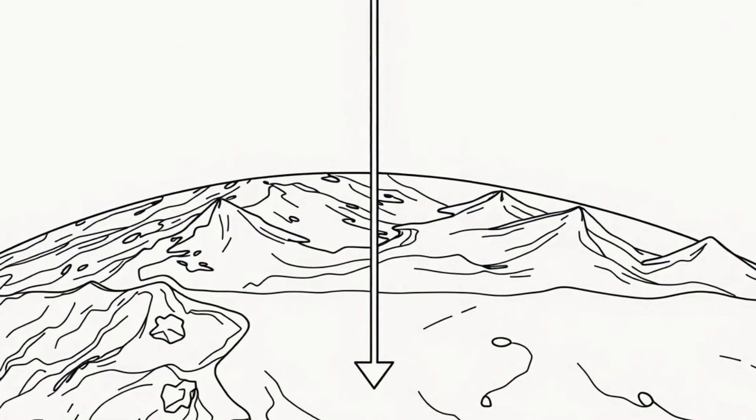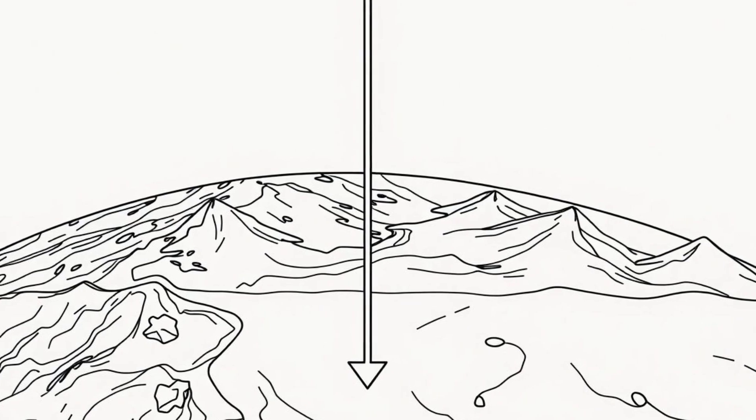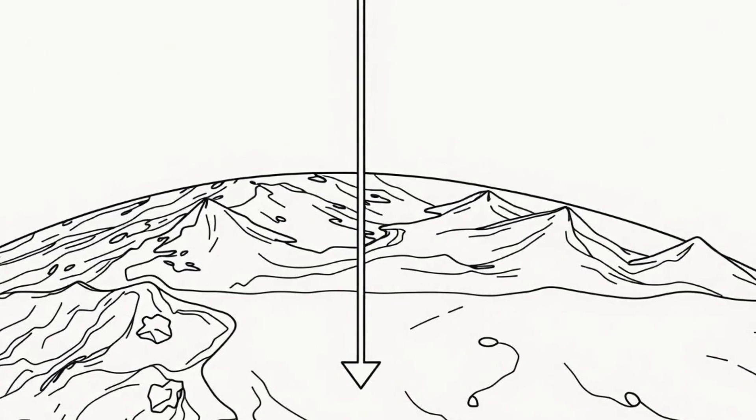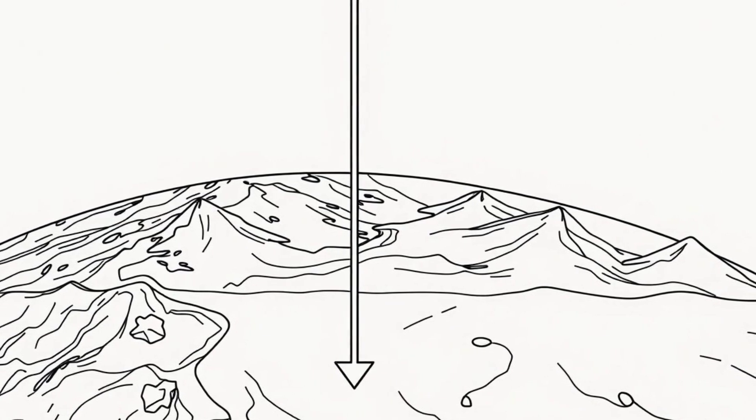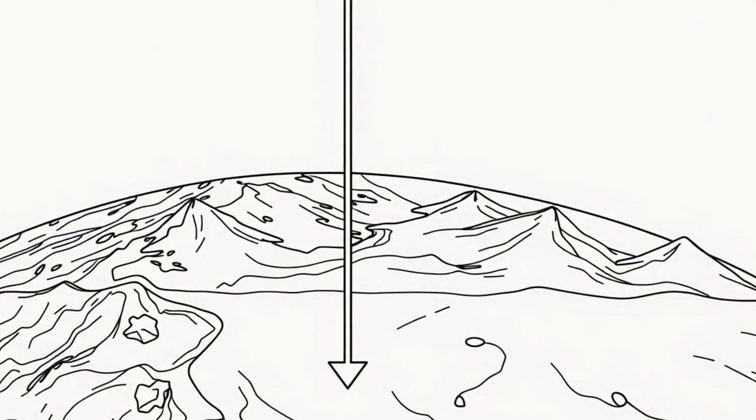Since gravity is affected by mass, the land's depression and slow recovery mean there's less mass in the region than there would be if the ice sheet had never existed. With less mass, there's also less gravity.